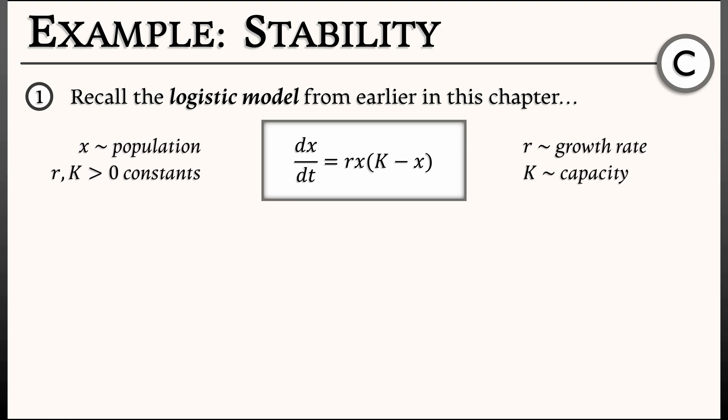Here, x is a population size, and r and k are positive constants. r is something like a reproduction rate or growth rate, and k is some kind of capacity, like a carrying capacity.